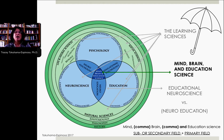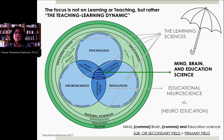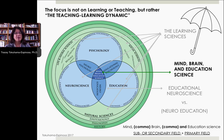The second thing that mind, brain, and education does — that the learning sciences doesn't do — is that the focus is not just on learning. The focus is on the teaching and learning dynamic, and how this iterative process actually creates understanding in the human mind.